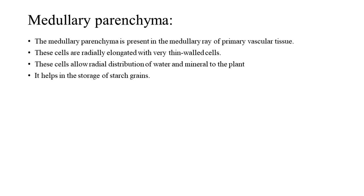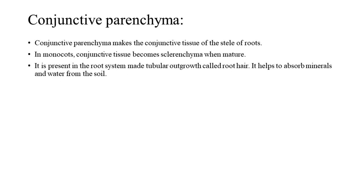Medullary parenchyma is present in the medullary ray of primary vascular tissue. These cells are radially elongated with very thin walls, and they allow radial distribution of water and minerals to the plant. It also helps in the storage of starch grains. Conjunctive parenchyma makes up the conjunctive tissue of the stele of roots. In monocots, conjunctive tissue becomes sclerenchyma when mature. It is present in the root system and forms tubular outgrowths called root hairs, helping to absorb minerals and water from the soil.